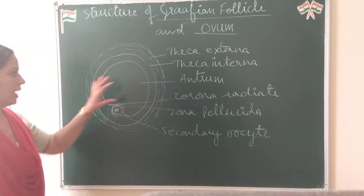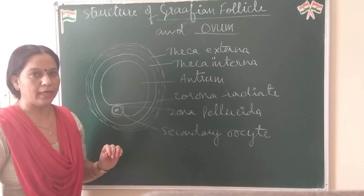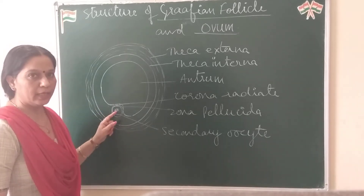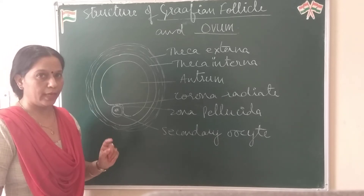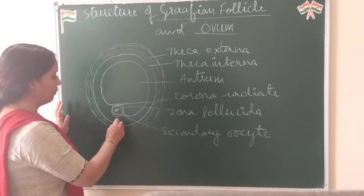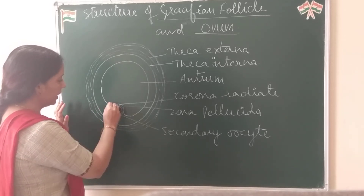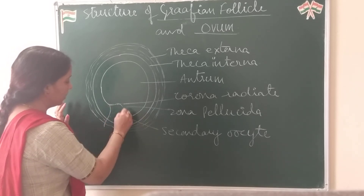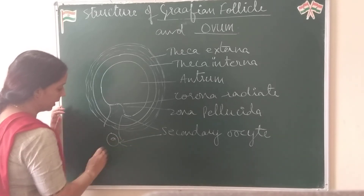When the Graafian follicle ruptures or breaks by the action of luteinizing hormone, it releases the secondary oocyte in the middle of the menstrual cycle on the 14th day, and this is called ovulation. That means at the time of ovulation, when the Graafian follicle ruptures, it is not releasing a hormone — it is releasing the secondary oocyte.